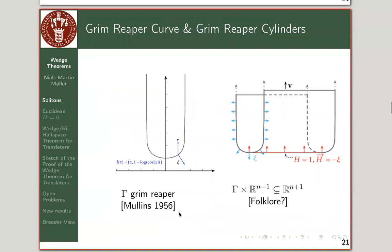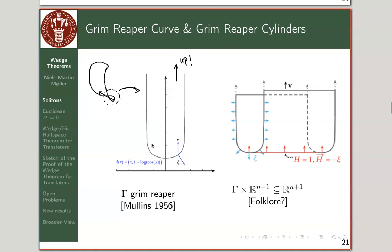Here are some pictures. The Grim Reaper goes back to Mullins. You can see the explicit formula: minus log of cosine, with asymptotes. It translates upwards. That's the curve you saw in the applet demonstration — when a curve is immersed but not embedded, you can see a Grim Reaper forming and translating in that direction. There's also the nice explicit formula minus log of cosine.